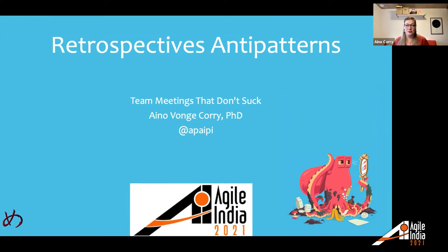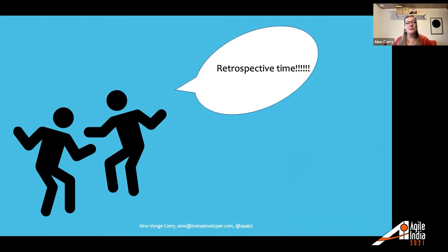I'm going to go through six anti-patterns from the book today. My goal is to explain why you should spend these 45 minutes — because I want your developers to look excited when they hear 'it's retrospective time,' not trying to run away, but genuinely happy. So that's my aim: to enable you to make retrospectives that people really appreciate and do not feel is a waste of time.